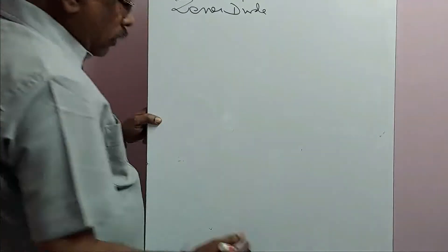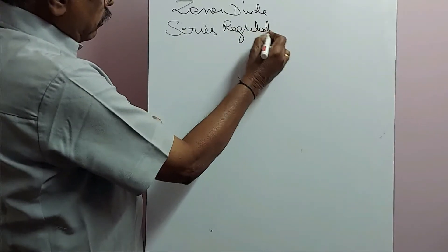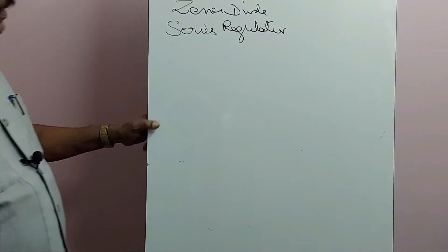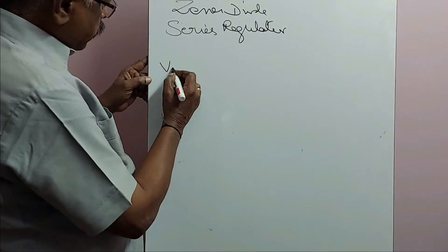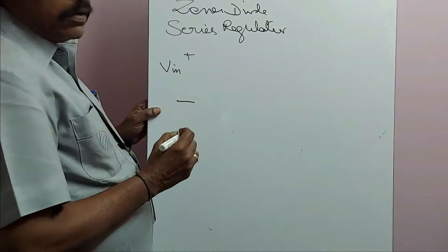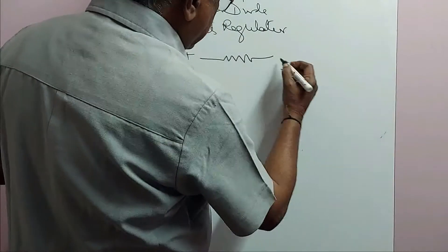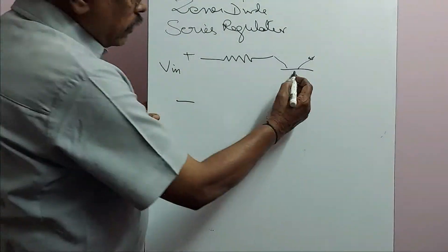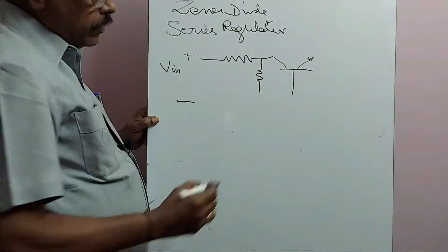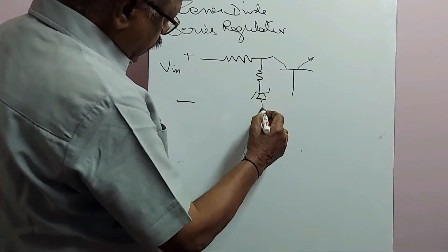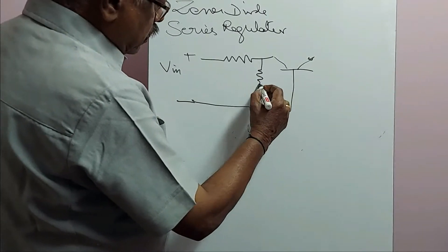A type of regulator called a series regulator will have a variable input, plus and minus terminals, a resistor, and then a high current NPN transistor like the 2N3055. The transistor has a collector, emitter, and base. There may be a resistor, and the zener is connected across this, with the center point of the resistor and zener connected to the base.